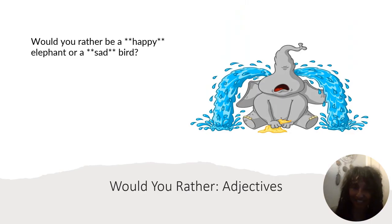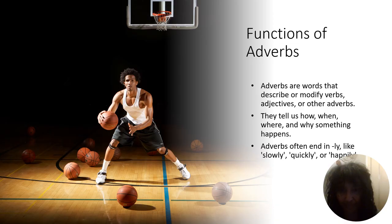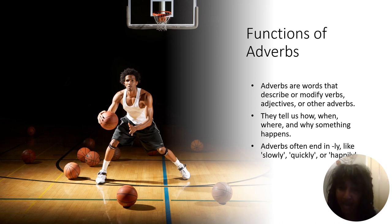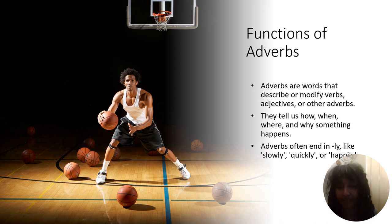Here's a fun way to use adjectives: would you rather be a happy elephant or a sad bird? Now let's talk about the functions of adverbs. Adverbs are words that describe or modify a verb, an adjective, or another adverb. They tell us how, when, where, and why something is happening. Many times adverbs end in the sound '-ly.' Like slowly, quickly, happily, suddenly.